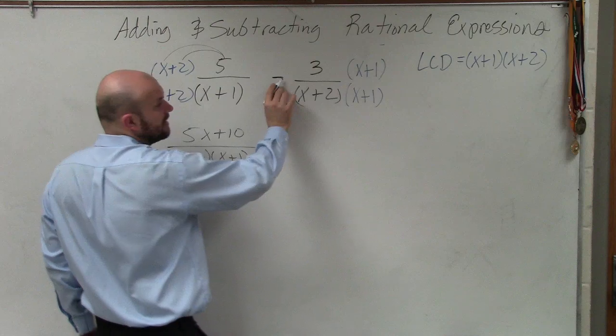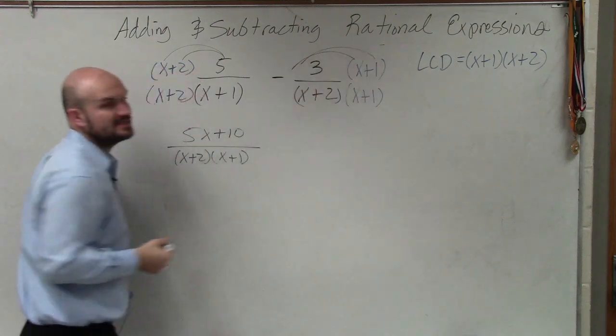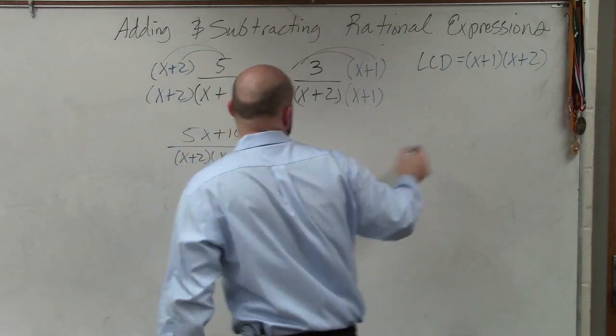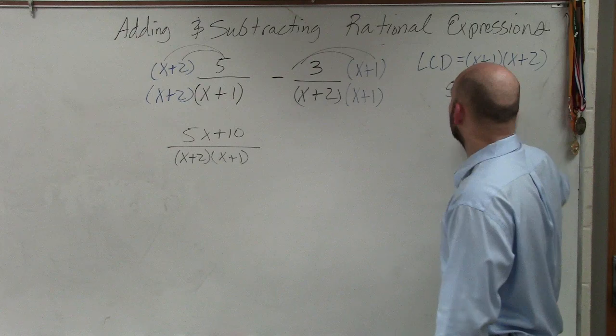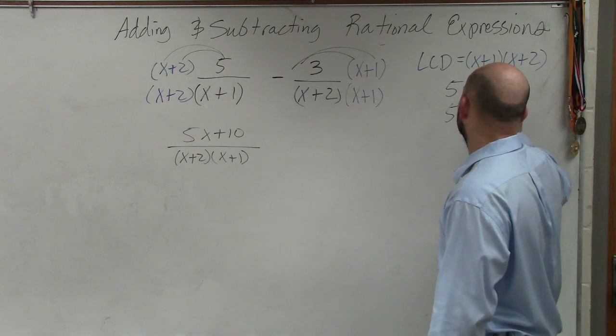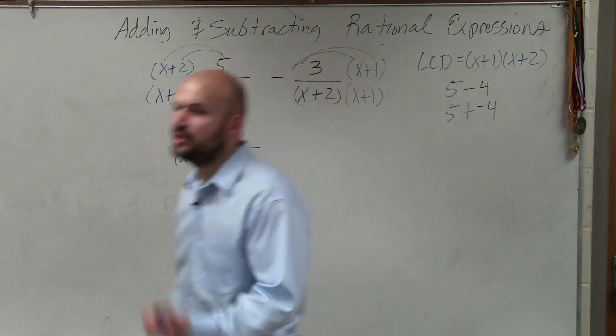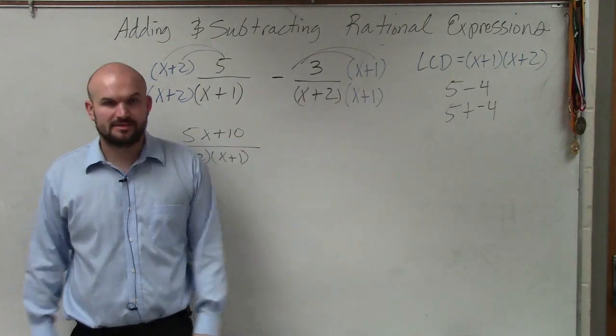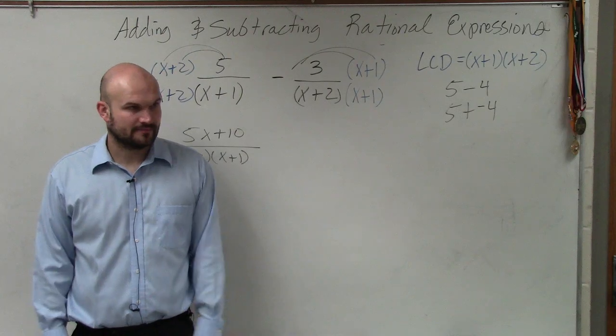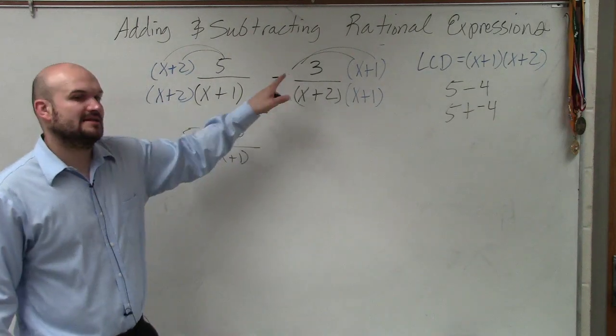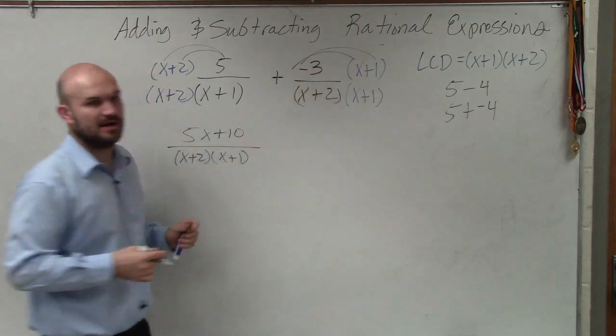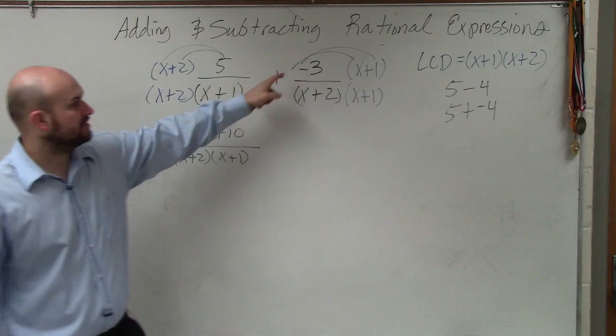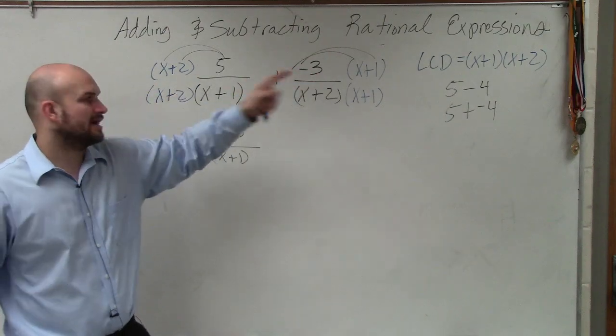So I have 5x plus 10 all over x plus 2 times x plus 1. And then over here, I can distribute the negative 3. Make sure you guys understand that's a negative 3. So 5 minus 4, please understand guys, 5 minus 4 is the same thing as 5 plus negative 4, correct? Do you guys agree with me? So what I'm actually going to do, any time I'm doing subtraction, I'm going to change this to an addition problem and make it an addition problem with a negative number.